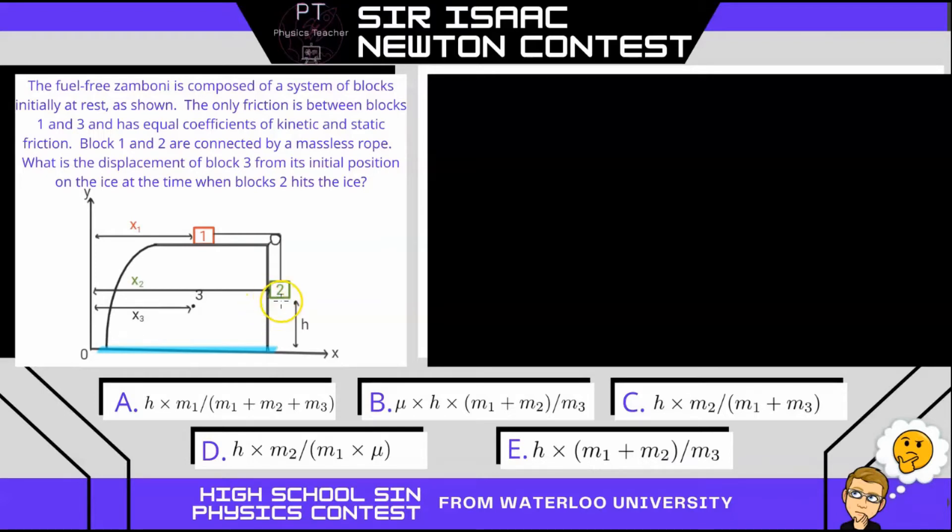So what happens is block 2 falls, which causes the entire Zamboni, or the entire system, to move, or change its position in X. And the question is, what is that displacement, or what is its change in position from that initial position?